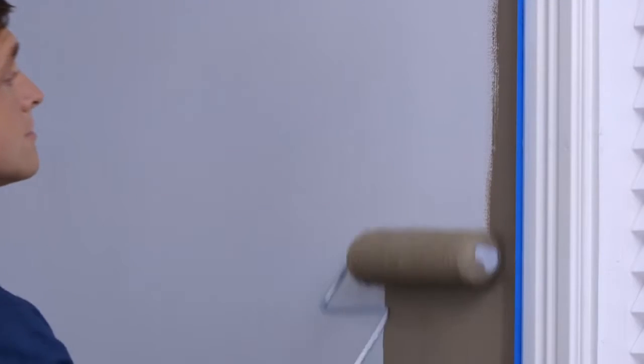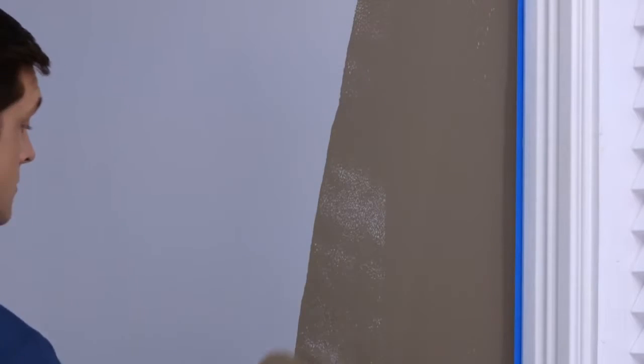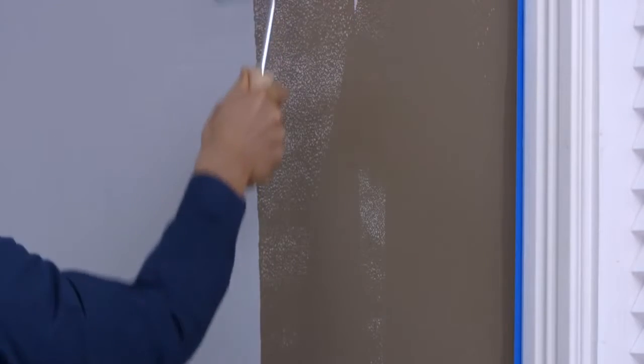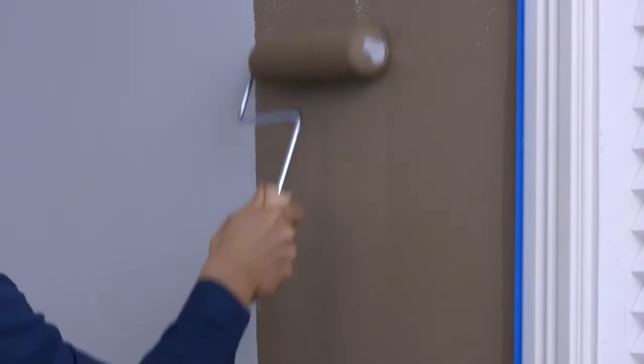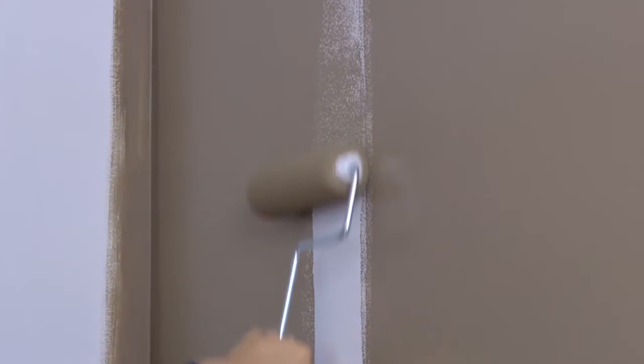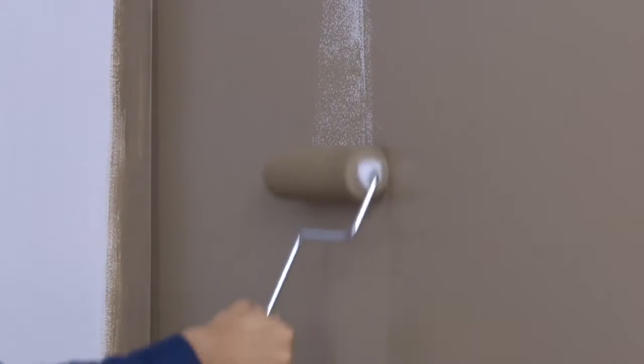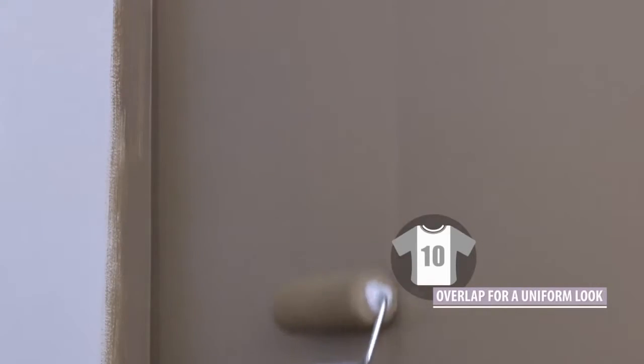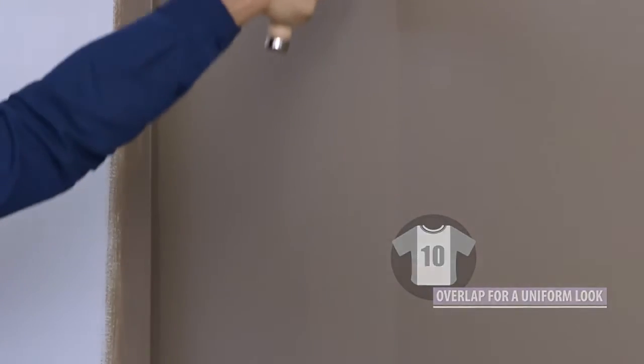Then, using your roller, come as close to the edges as possible. Carefully overlap the areas you trimmed while they're still wet. Rolling in an N pattern, that's a capital N, always work towards the areas of the wall you just painted, overlapping onto the wet paint. This will give your walls a uniform look once your paint is dry. For larger spaces, you may want to edge and finish one side of the room at a time.